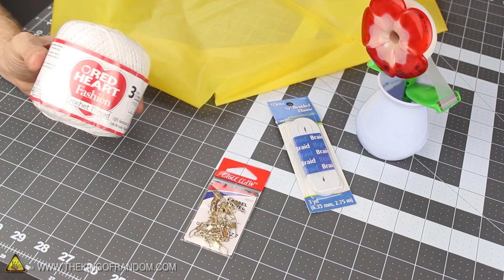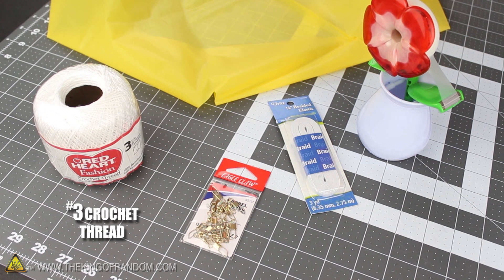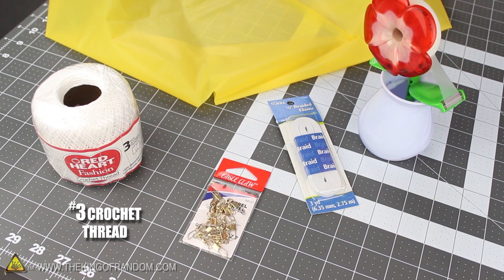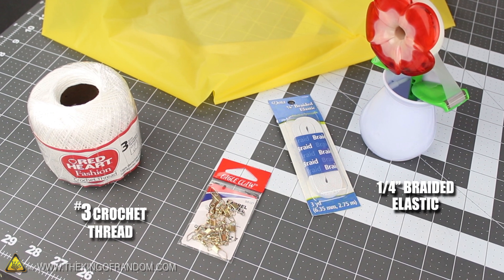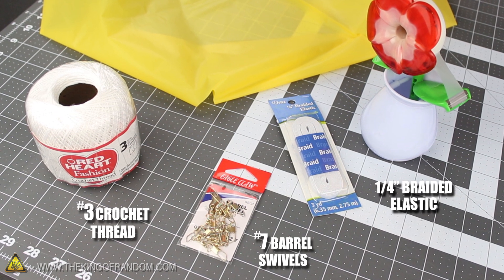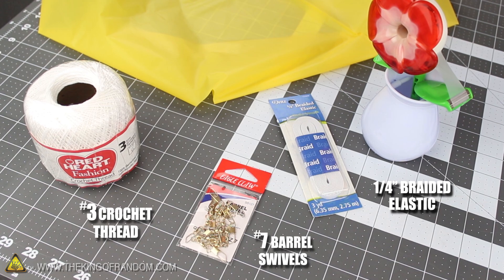Okay, we're ready to rig the parachute cording, and for that I'm using this number 3 crochet thread I got from a local supercenter, but any other kind of string will probably work just as well. I also picked up some quarter inch braided elastic cording and a pack of number 7 barrel swivels from the fishing aisle. We'll see what those are for in just a minute.